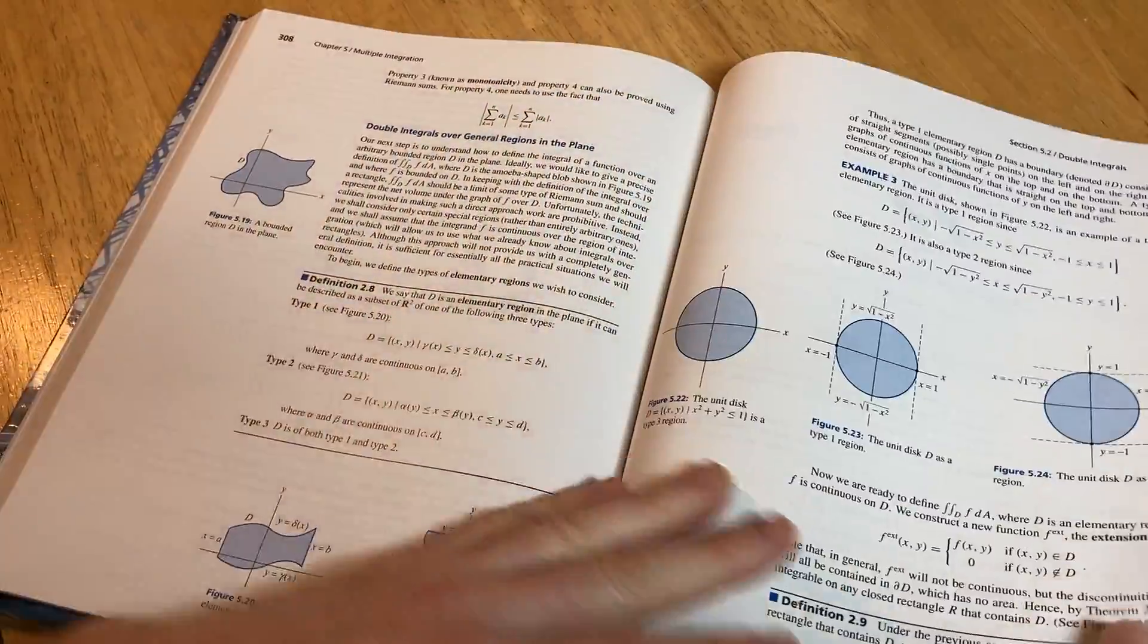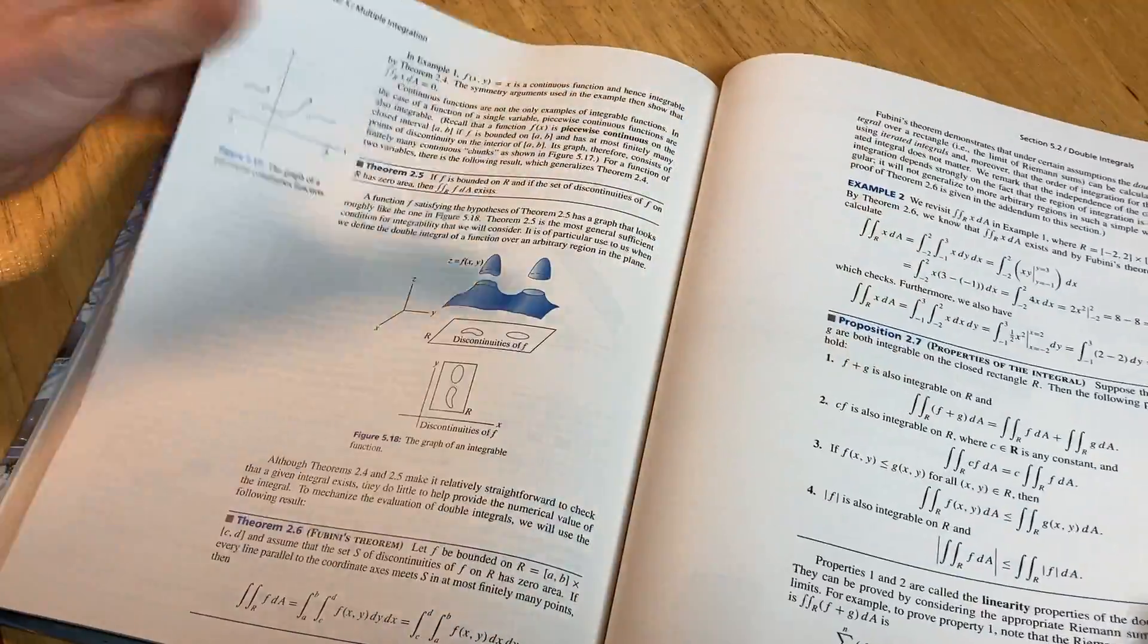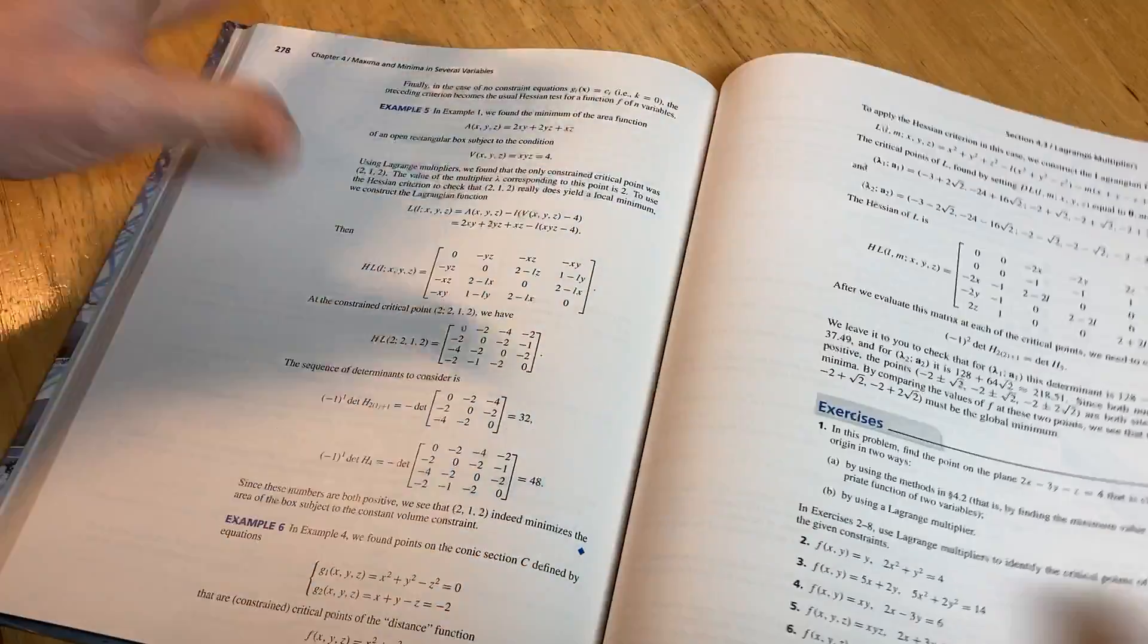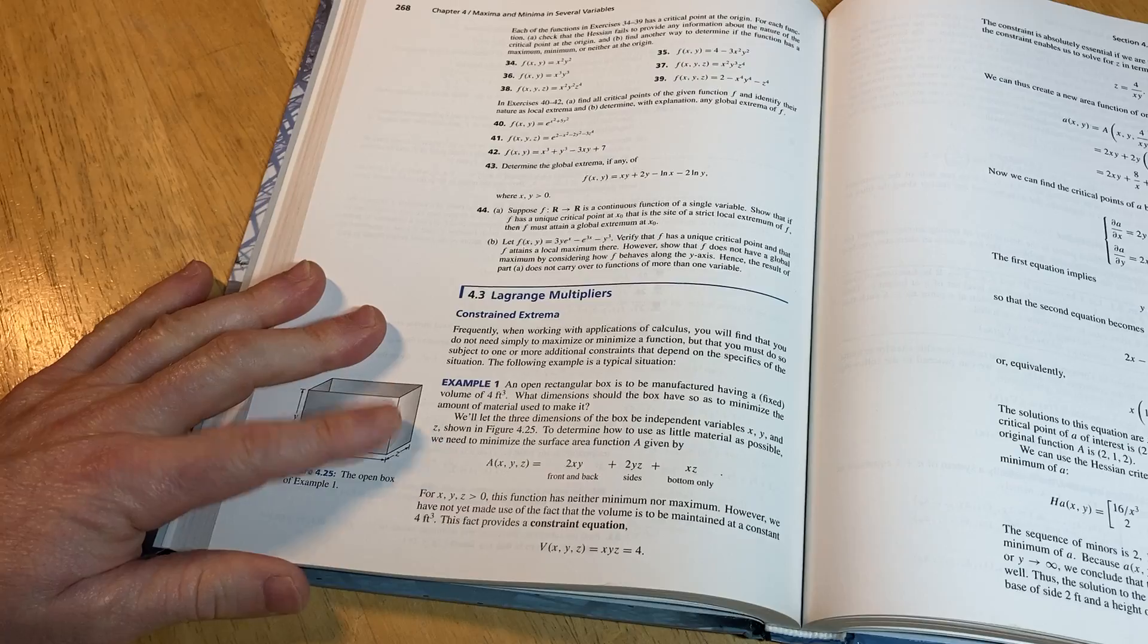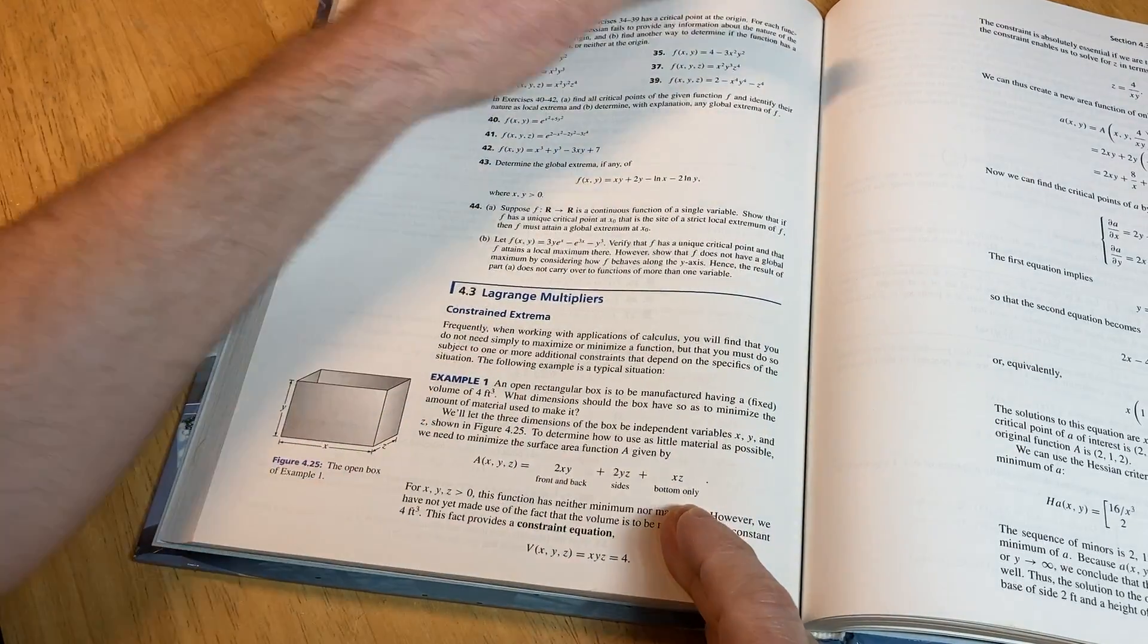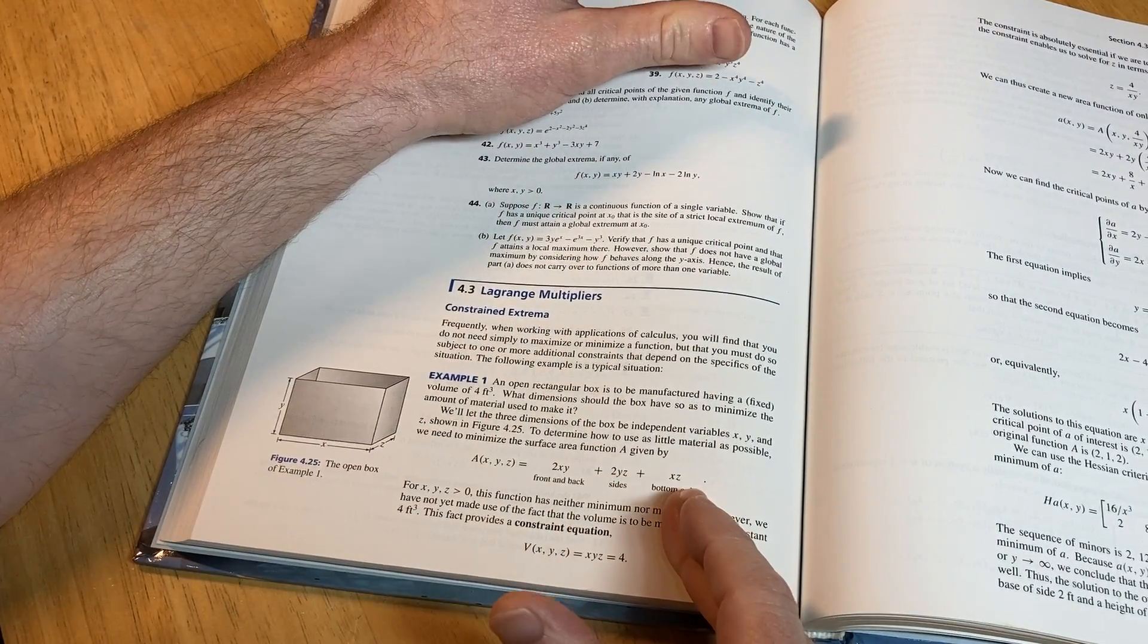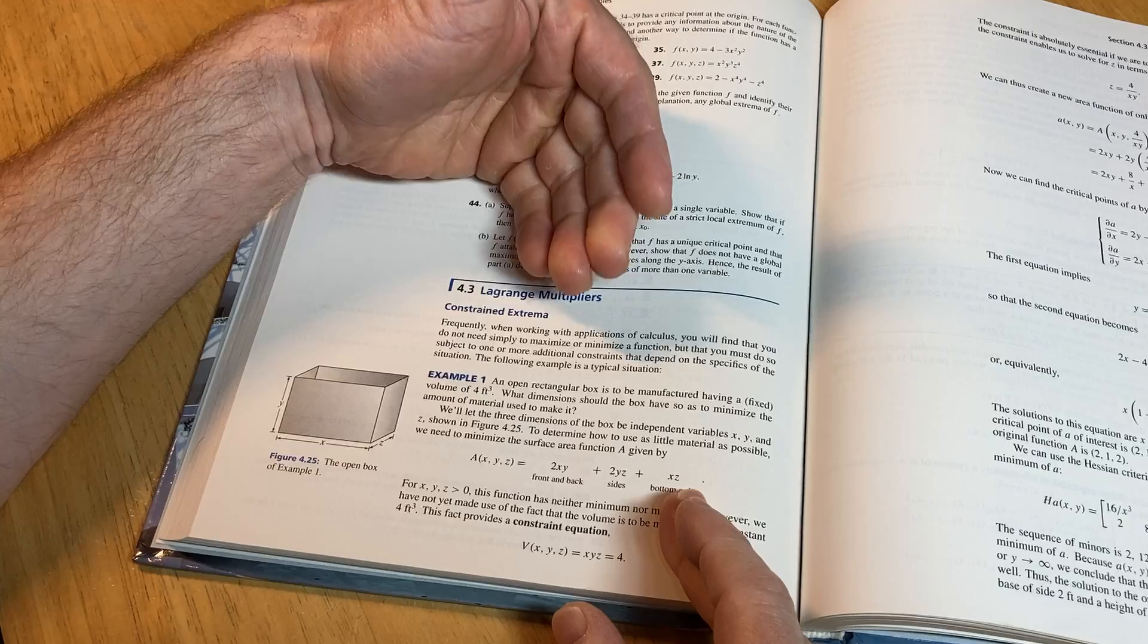Let's just flip through the book so you can see like the layout of the book here. So let's just go, I don't know, maybe here. So Lagrange multipliers, this is something that's really fun and is taught, again, in Calculus 3. This is something you probably will cover if you take Calc 3.